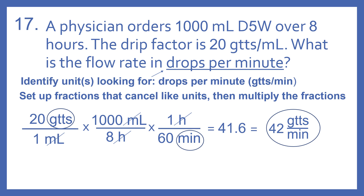So this is a flow rate calculation. To do those calculations, first identify the units you're looking for. We're looking for drops per minute, or GTTs per min. Set up the fractions that cancel like units, and then multiply the fractions. We want drops on the top and minutes on the bottom.